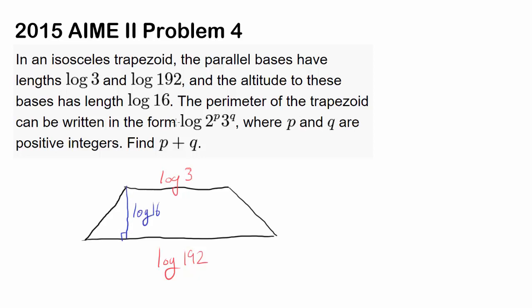The perimeter of the trapezoid can be written as log 2^p × 3^q, where p and q are positive integers and we wish to find p + q. Since we want to write our answer as log of powers of 2 and 3, let's convert all the logarithms in terms of 2 and 3.